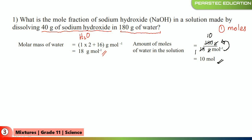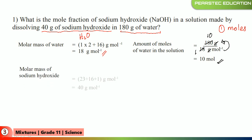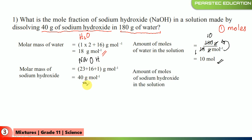Now let's find out how many moles of sodium hydroxide are in the solution. First we find the molar mass of sodium hydroxide: sodium is 23, oxygen is 16, and hydrogen is 1, so 23 + 16 + 1 = 40 grams per mole. Now we find the moles of sodium hydroxide: we have 40 grams, divided by 40 grams per mole, and the answer is 1 mole.